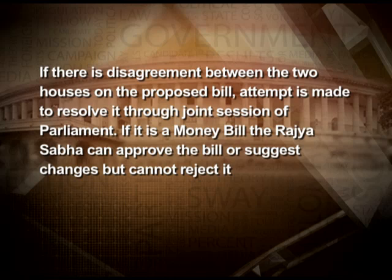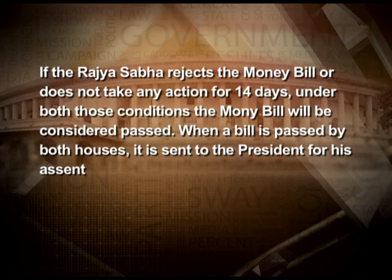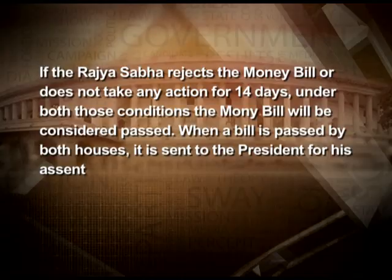If it is a money bill, the Rajya Sabha can approve the bill or suggest changes, but cannot reject it. If the Rajya Sabha rejects the money bill or does not take any action for 14 days, under both circumstances the money bill will be considered passed. When a bill is passed by both houses, it is sent to the president for his assent. The assent of the president results in the enactment of a bill into a law. This is how a bill translates into a law, and parliamentary committees or joint parliamentary committees play a vital role in this process of law-making.